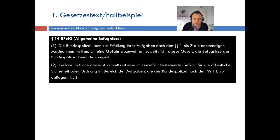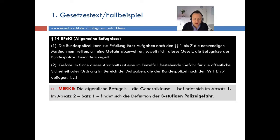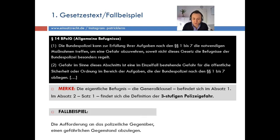Paragraf 14 Absatz 2 – ich komme gleich dazu, warum der so wichtig ist, warum ich den auch hier erwähnen muss. Hier ist die Gefahr definiert, und zwar die dreistufige bzw. dreischichtige Polizeigefahr. Die Gefahr im Sinne dieses Abschnittes ist eine im Einzelfall bestehende Gefahr für die öffentliche Sicherheit oder Ordnung im Bereich der Aufgaben, die der Bundespolizei nach den Paragrafen 1 bis 7 obliegen. Die eigentliche Befugnis ist im Absatz 1 geregelt und im Absatz 2 Satz 1 befindet sich die Definition der dreistufigen Polizeigefahr.